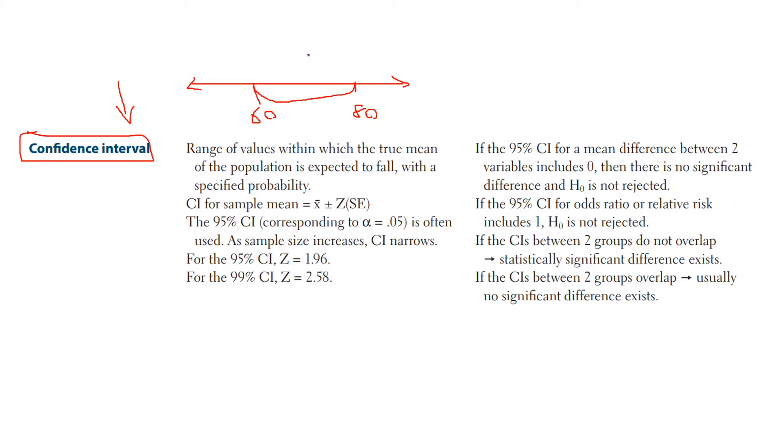The confidence interval helps tell us where we think the true population mean is going to lie within a specified probability. For example, 95% or 99%. If we use a z of 1.96, we are 95% sure that the true population mean is somewhere between these two points.